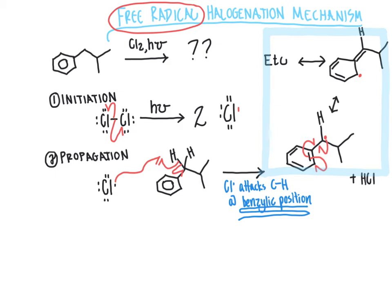Aromaticity confers a great amount of stability in molecules. As a result, the resonance structure that maintains aromaticity is the most favorable, and the product we create from the reaction corresponds exclusively to maintaining that aromaticity. So even though multiple resonance structures account for why radical formation is most favored at the benzylic position, the final product has the aromaticity restored.